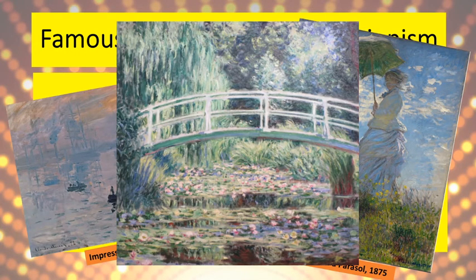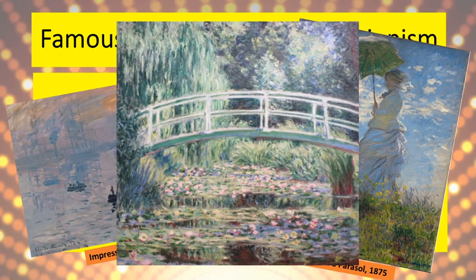His most famous paintings of all, what he is renowned for, are his paintings of his water lilies in his Japanese garden. This is one of the many that he painted over the 40 years that he painted these water lilies. You could do some research and find some other paintings by Monet and see which one you like the best — there are so many different amazing paintings that he did.